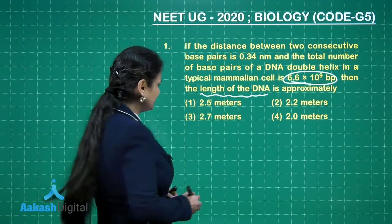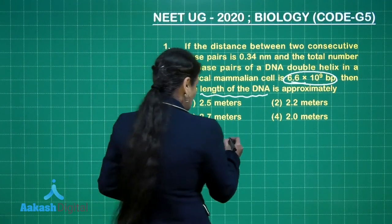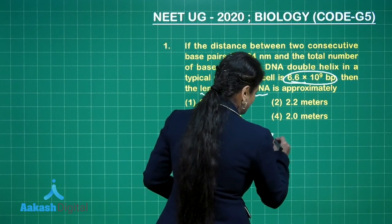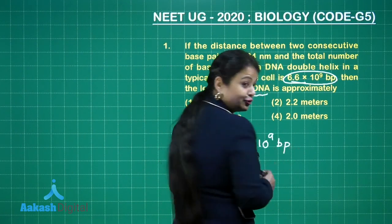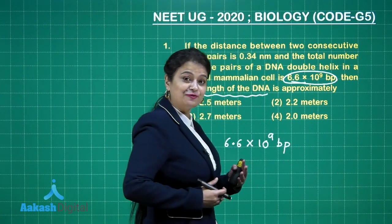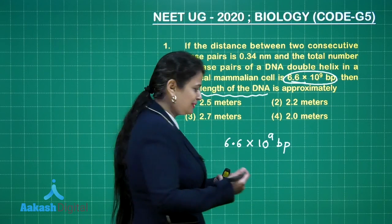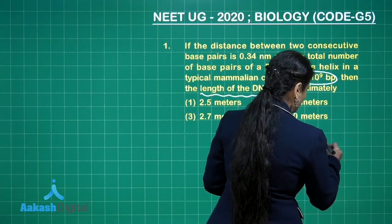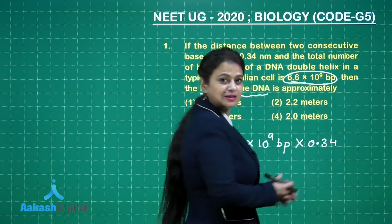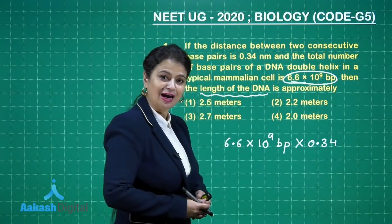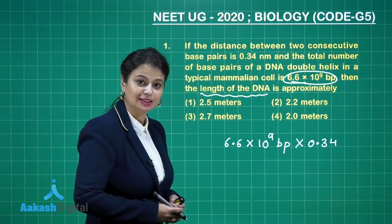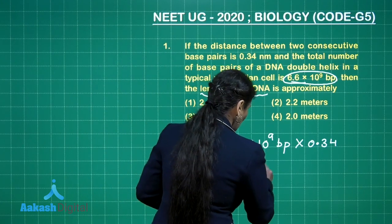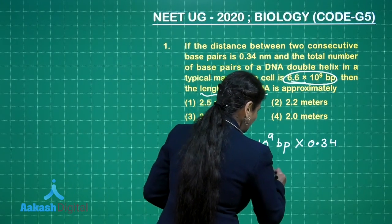So, 6.6 × 10⁹ base pairs are present. To find the total distance, you have to multiply it by 0.34. This distance is going to be in nanometers, but we have to calculate it in meters. You know very well that 1 nanometer is equal to 10⁻⁹ meters.